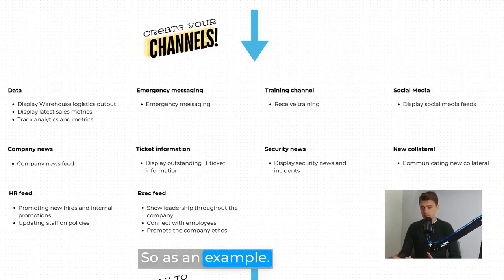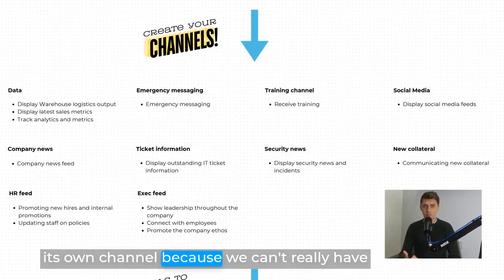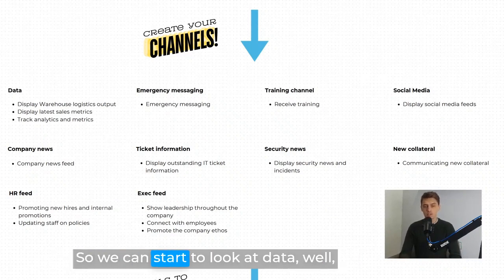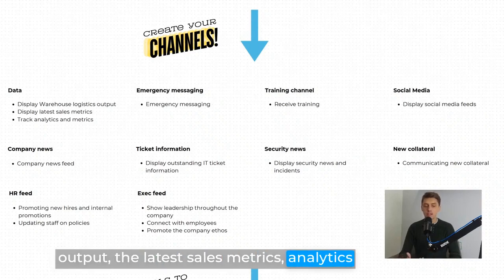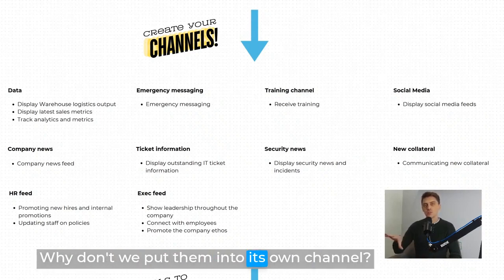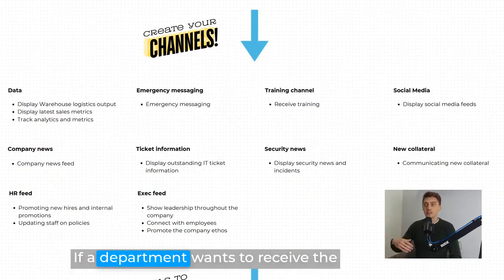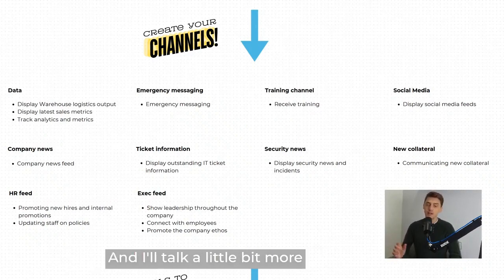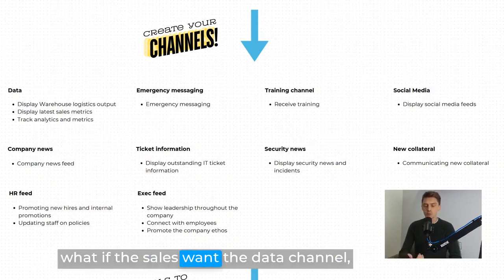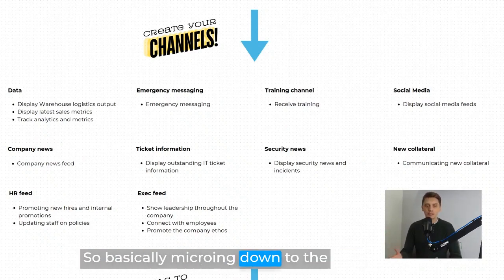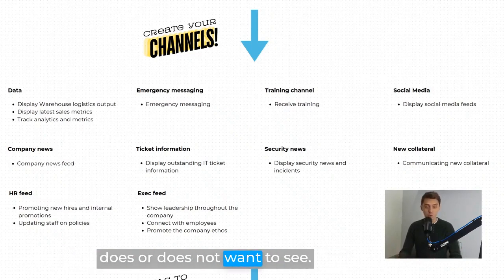So I've broken down all of those pieces and what you need to do is say: where do I see similarities in requests, and where can I reduce down the amount of channels I need to manage? Emergency messaging is always going to be its own channel — you can't have emergency messaging and social media sitting in the same place. But warehouse and logistics output, the latest sales metrics, analytics and metrics — all of that is data, so why not put them into their own data channel? If a department wants to receive the data channel, they can — and I'll talk about tagging later.